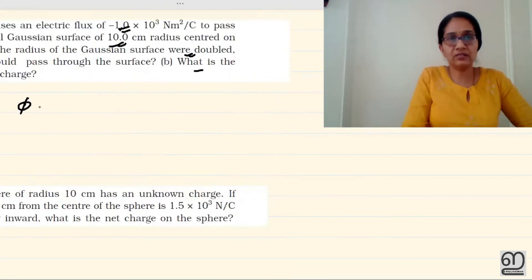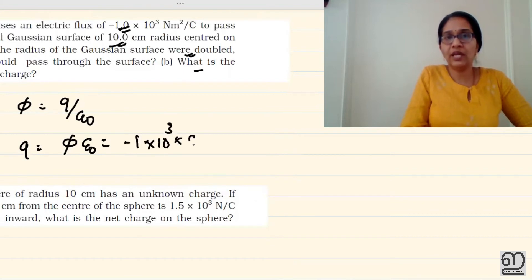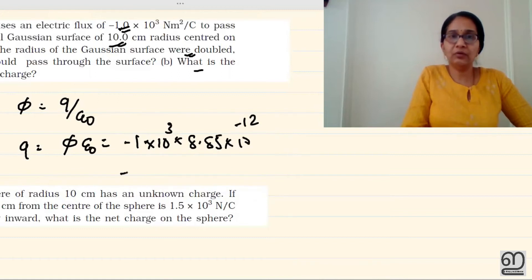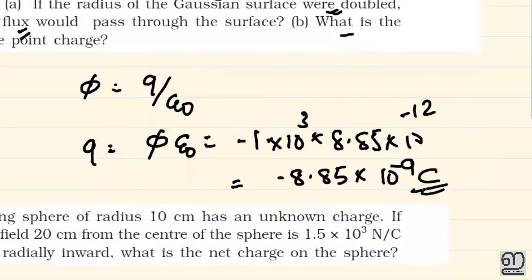What is the value of the point charge? Using φ = Q/ε₀, we get Q = φ × ε₀. That is minus 1 into 10 raised to 3 into 8.85 into 10 raised to minus 12. Multiplying this gives minus 8.85 into 10 raised to minus 9.